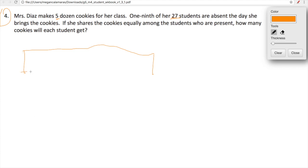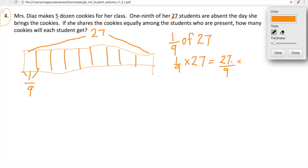One ninth are absent. Let's figure out how many kids are absent. We can figure that out by finding one ninth of 27. One ninth of 27 equals one ninth times 27. One times 27 is 27 over nine. 27 over nine equals 27 divided by nine, which equals three. So we know three kiddos are absent. If three kiddos are absent, she has 27 kids in class. That means that there are 24 lucky kids that are getting the cookies.